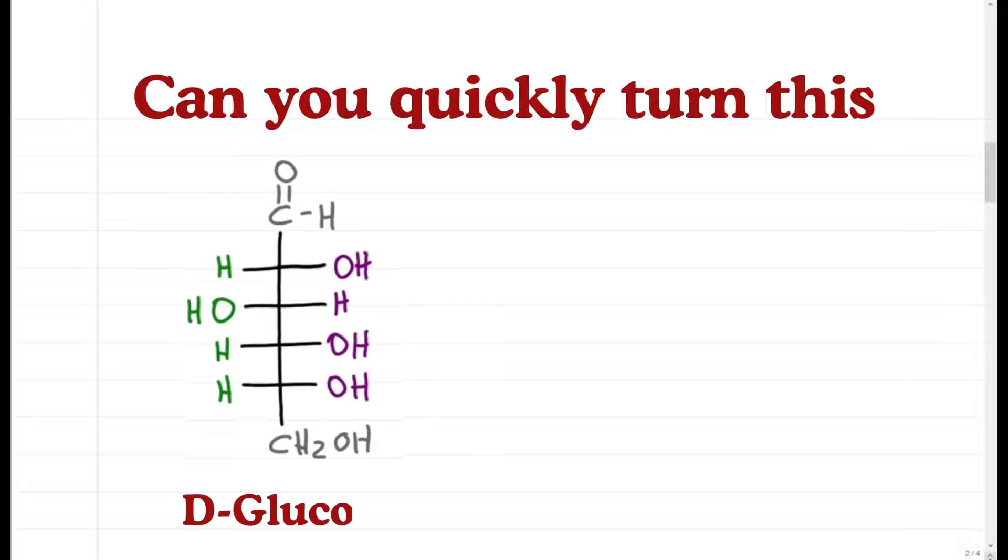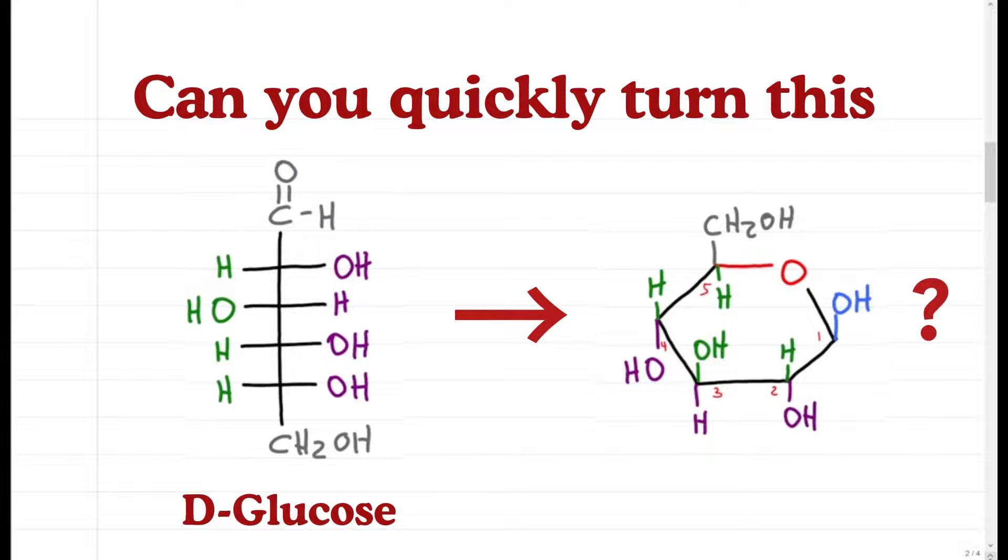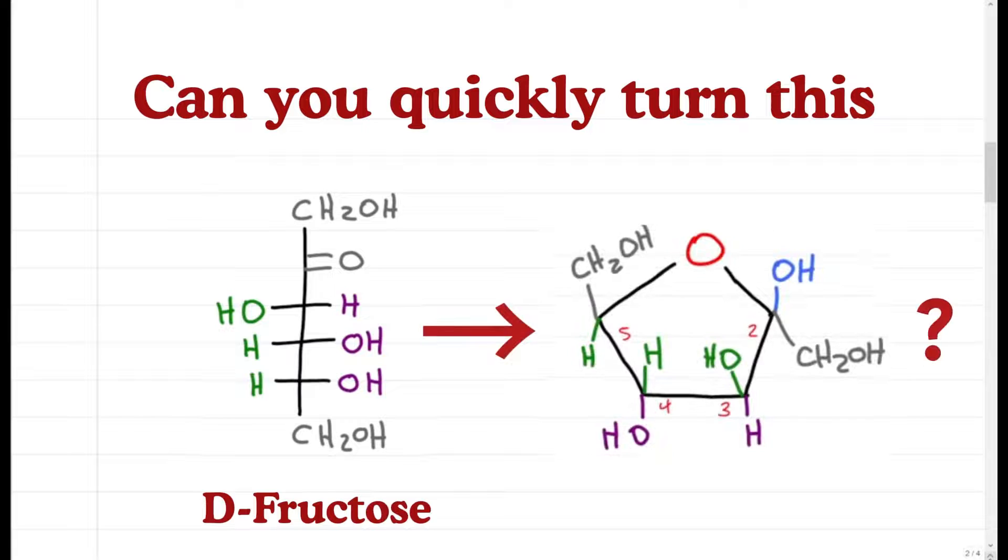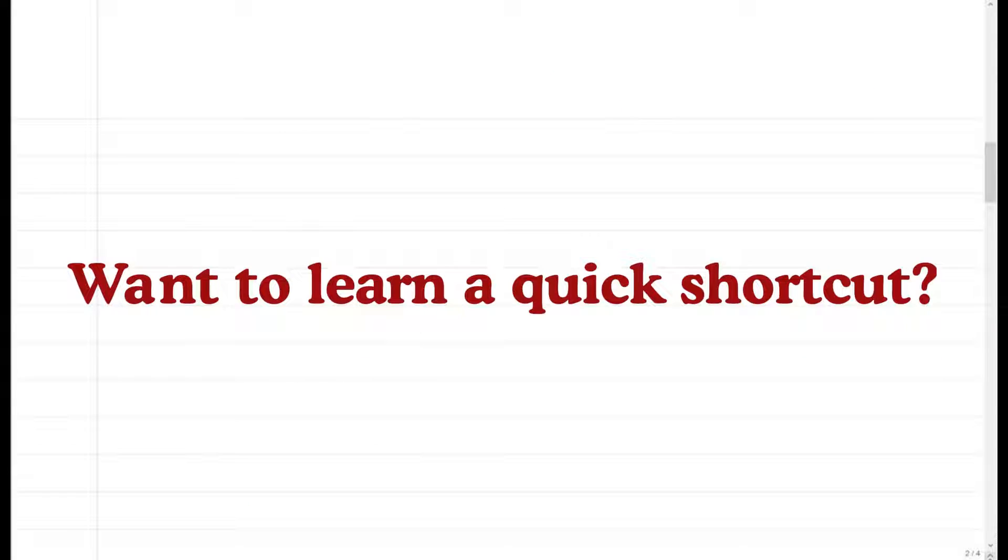Can you quickly turn this D-glucose into its Haworth projection? What about this D-fructose? Want to learn a quick shortcut?